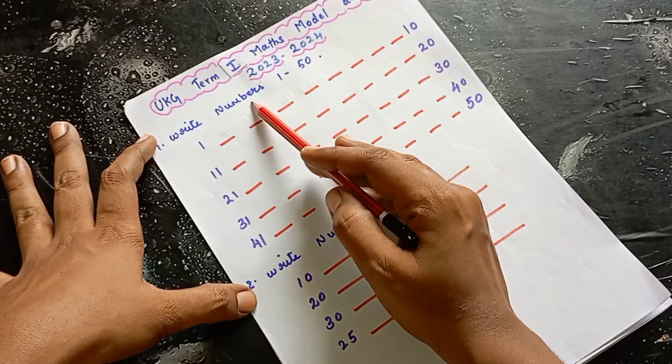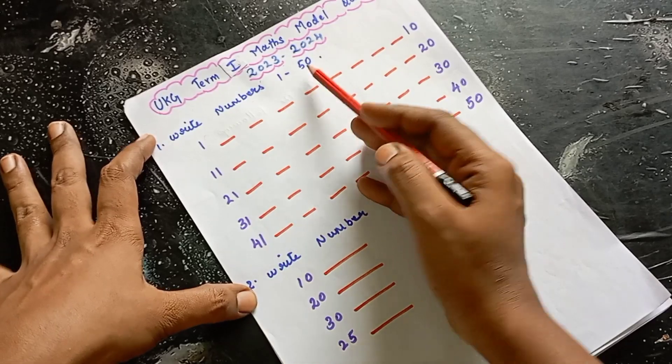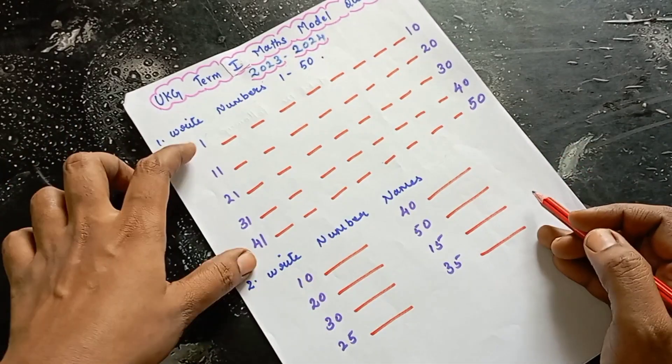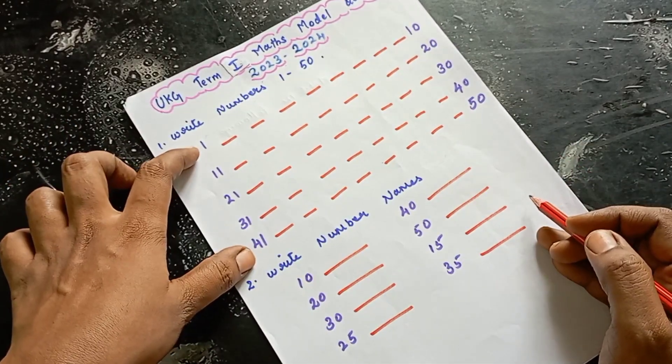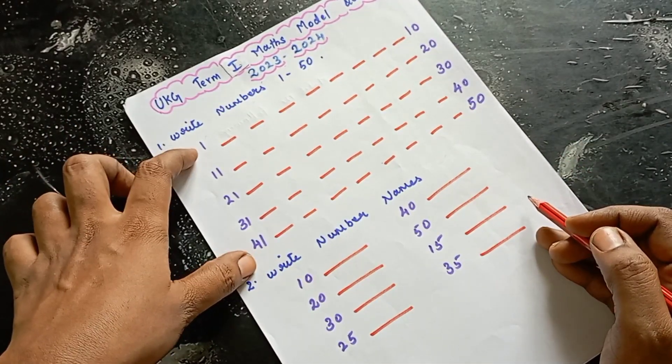Question number 1 is: write numbers 1 to 50. Here we are going to write 1 to 50.